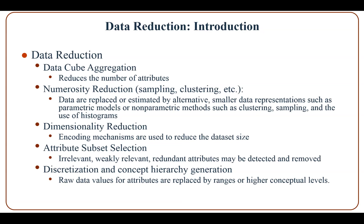Data reduction techniques are used to reduce the representation of datasets and make data mining more efficient. Strategies include: data cube aggregation, in which aggregation operations reduce the number of attributes; numerosity reduction, such as sampling and clustering, in which data are replaced by alternative smaller representations using parametric models, clustering, sampling, or histograms; dimensionality reduction, in which encoding mechanisms reduce the dataset size; attribute subset selection, in which irrelevant, weakly relevant, and redundant attributes are detected and removed; and finally, discretization and concept hierarchy generation, in which raw data values are replaced by ranges or higher conceptual levels.